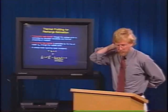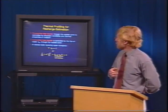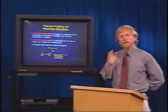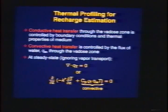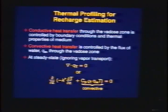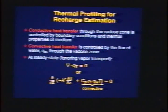Another technique we can use — not often applied in the unsaturated zone — is thermal profiling: looking at temperature profiles. There are two heat transfer mechanisms in a deep unsaturated zone. The first is conductive heat transport, which is energy from radioactive decay deep in the crust being conducted upward through the grains, water phase, and gas phase to the land surface. The second is convective heat transport — the amount of heat moved with the flowing water phase.